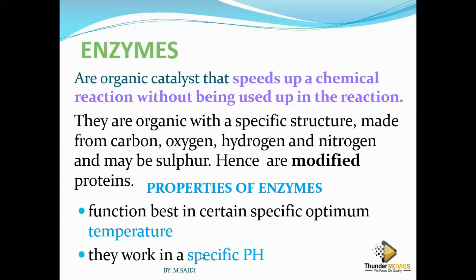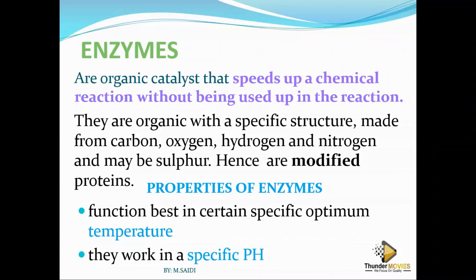Number two, enzymes work in a specific pH — you'll see this with a graph. It depends on the enzyme: if it is an acidic enzyme like pepsin, it cannot work in alkaline. If it is an alkaline enzyme like trypsin, it cannot work in acidic medium. If it is a neutral enzyme like salivary amylase, it cannot work in acidic medium. So enzymes are specific in pH.